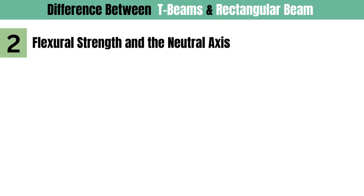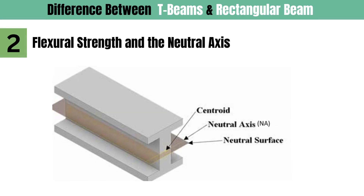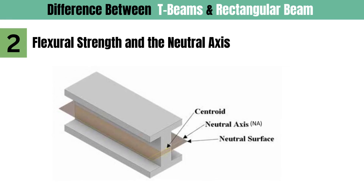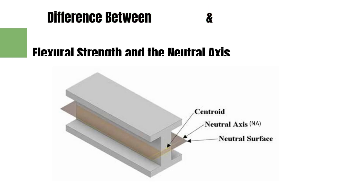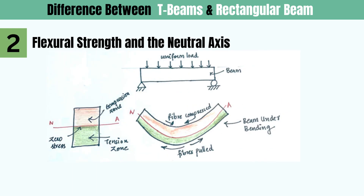Now let's talk about flexural strength and the neutral axis. To understand why T-beams outperform rectangular beams in bending, we need to examine the concept of the neutral axis — an invisible boundary in every bending beam. When a reinforced concrete beam is loaded, it bends. The top portion of the beam is under compressive stress, and the bottom portion stretches, that is, it will be under tensile stress.